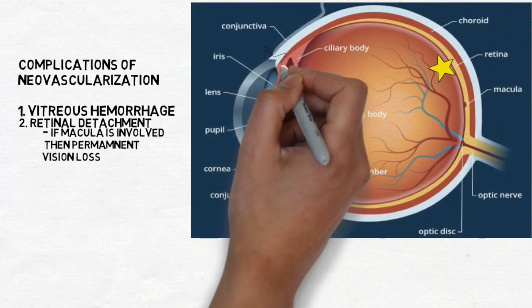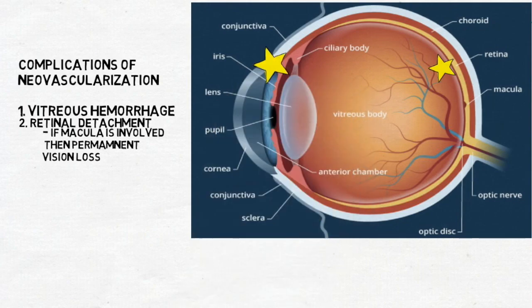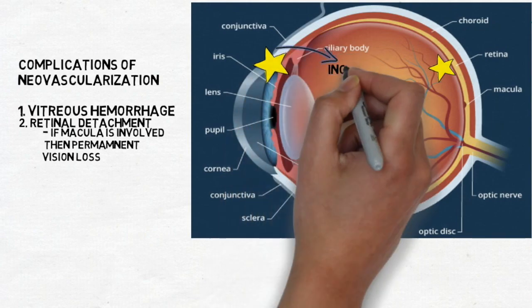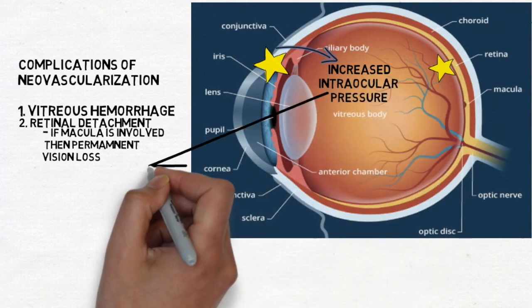The angiogenic event can also occur anteriorly in the eye. Vessels can form at the angle of the anterior chamber where aqueous fluid drains out, as discussed in the anatomy section. This obstruction increases intraocular pressure and causes acute glaucoma. However, the events above that cause sudden vision loss or acute glaucoma are not even the most common causes of vision loss in diabetic retinopathy.